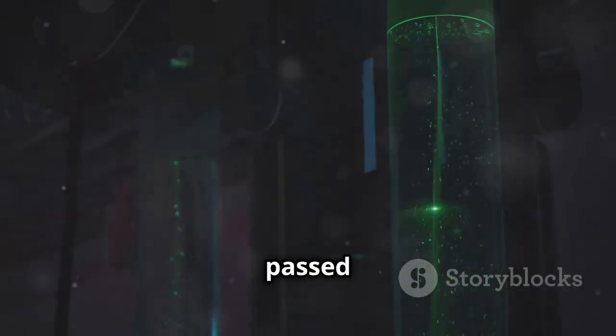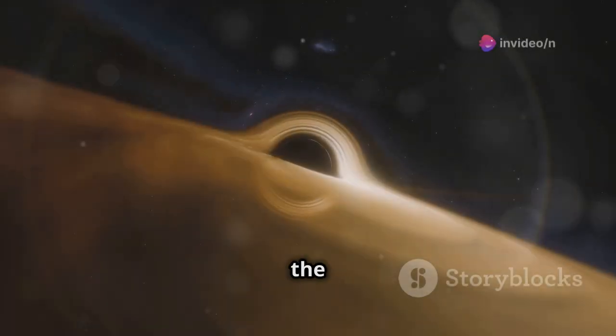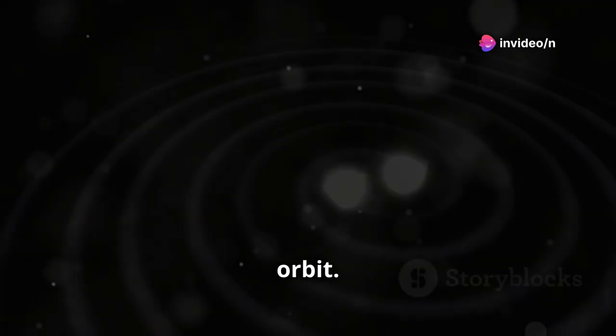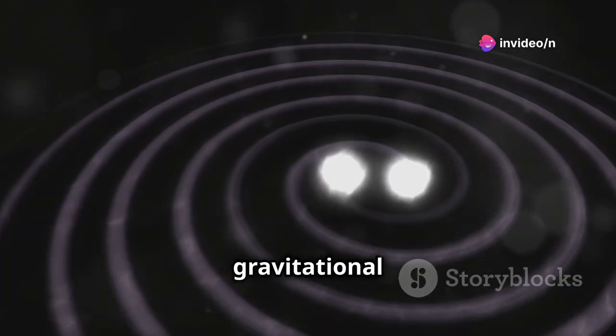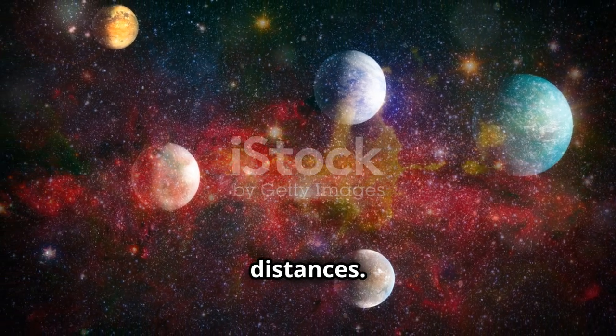General relativity has passed every test thrown at it. It predicted the bending of light by gravity. It explained the precession of Mercury's orbit. More recently, it predicted gravitational waves. The theory works flawlessly for large objects and vast distances.